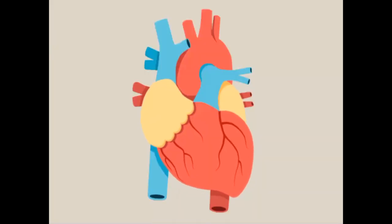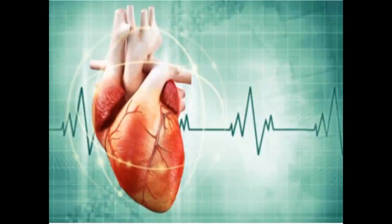The heart contracts and relaxes with a definite rhythm. This is called heartbeating. The normal heart rate for adults is from 60 to 100 beats per minute.